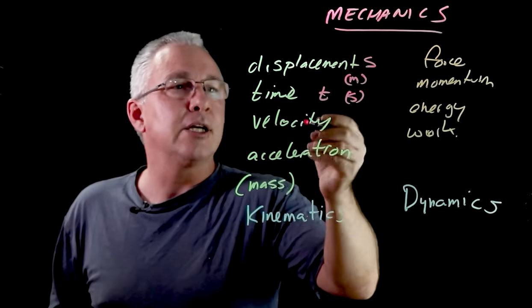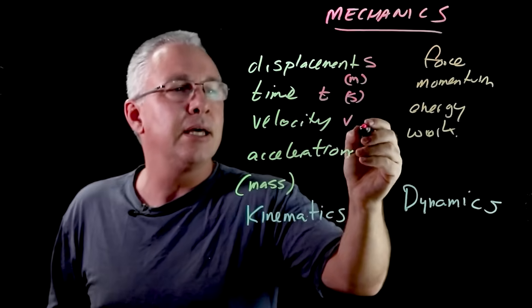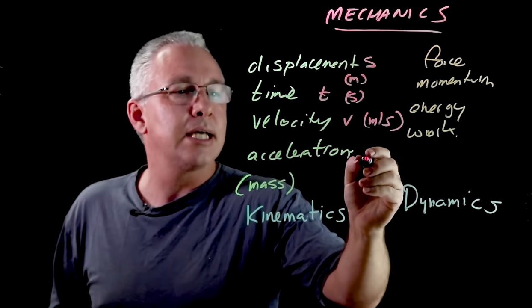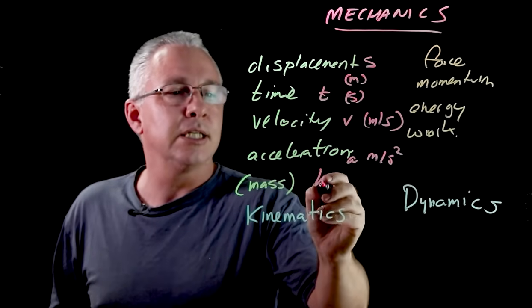For velocity it's a combination of those two. So in other words the symbol of course is v, but now it becomes meters per second as a unit. Acceleration is a and meters per second squared. Mass of course is kilograms.